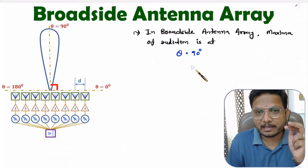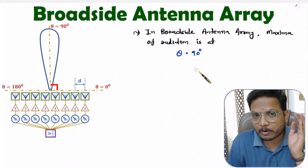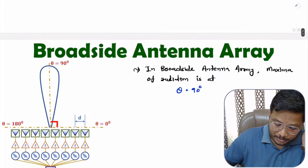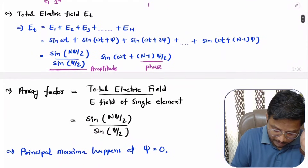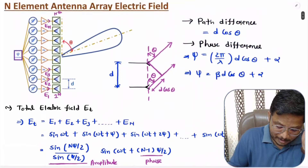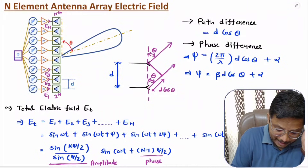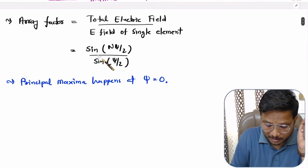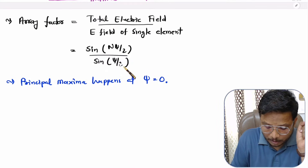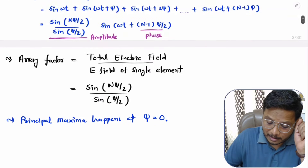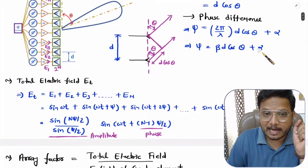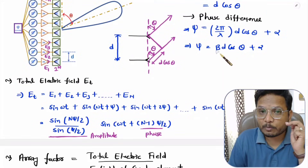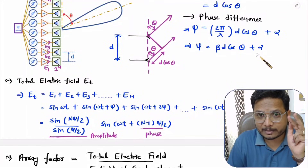Based on the radiation mechanism of end-fire and broadside antenna arrays, we can identify some interesting parameters. In my last video I explained the calculation of array factor and derived the array factor for an N-element array. The array factor equation is: sine of (N·ψ/2) divided by sine of (ψ/2), where ψ equals β·d·cos(θ) plus α. Here, d is the spacing between two elements, β is 2π/λ, and α is the initial phase between two elements.